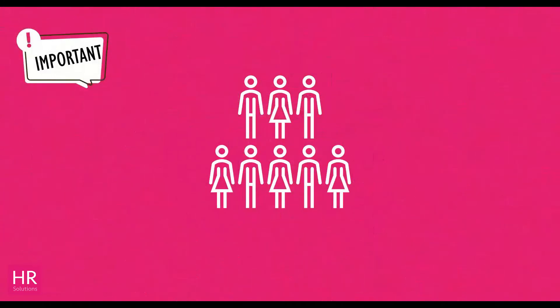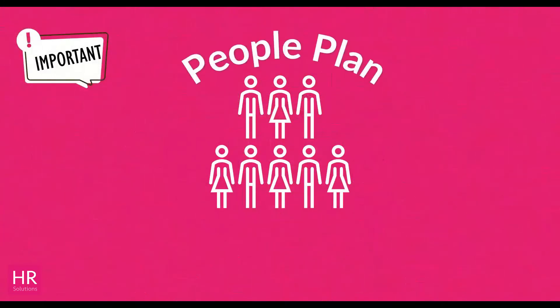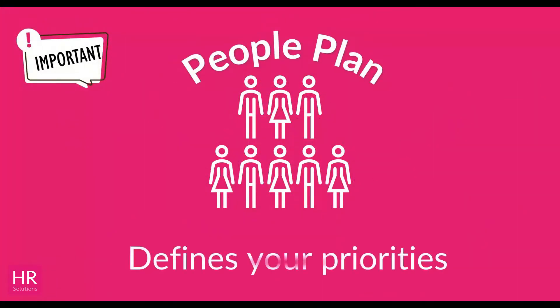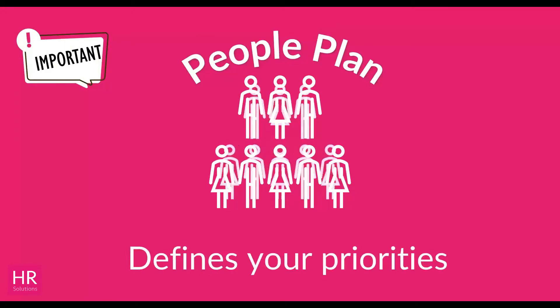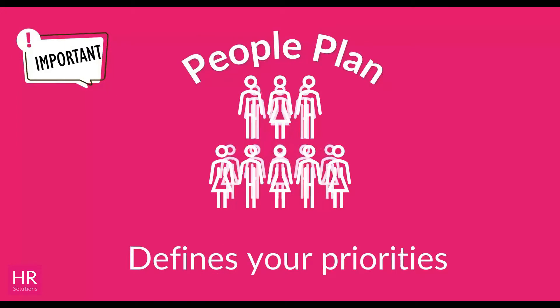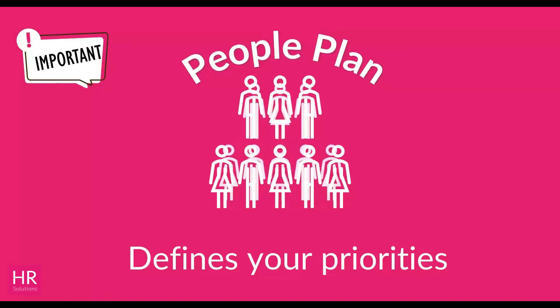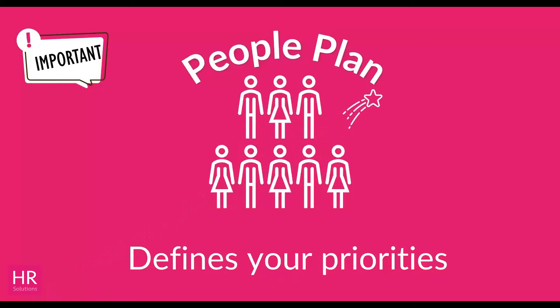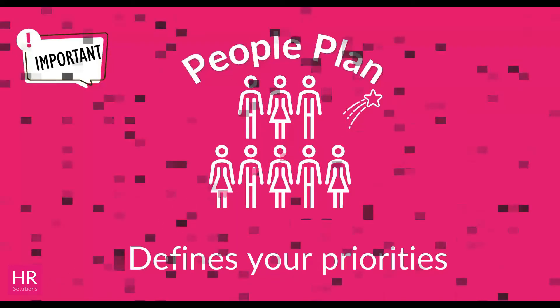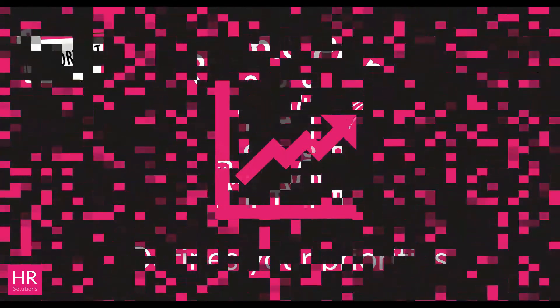And it's really simple — a people plan is literally a written list of defined priorities that are all people focused. The plans you put in place will allow your people to reach their full potential and therefore maximise their contribution to the business. But to do this, your people plan must align to your business plan.